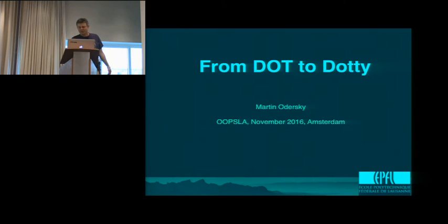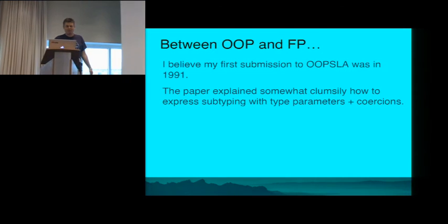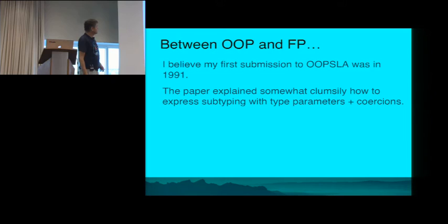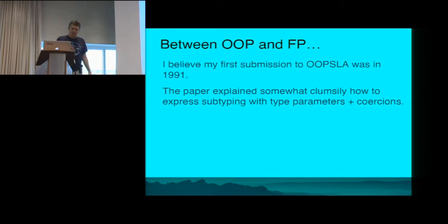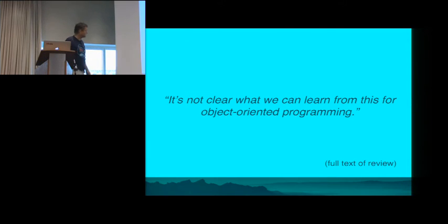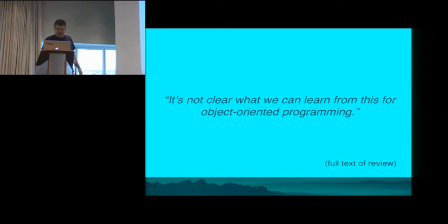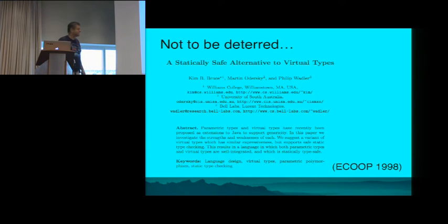I want to start with my journey, which has been for a large part of my professional life a journey between object-oriented and functional programming. My first submission to ECOOP was actually in 1991. The paper explained somewhat clumsily how to express subtyping with type parameters and coercions. It got summarily rejected. Seven years later, I tried again at ECOOP 98.